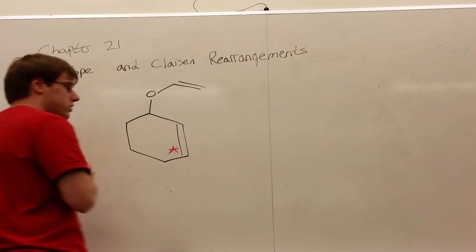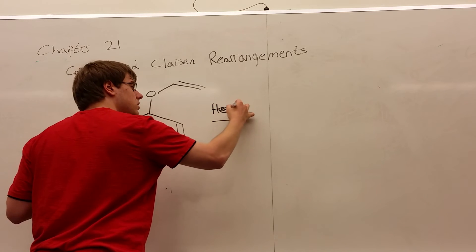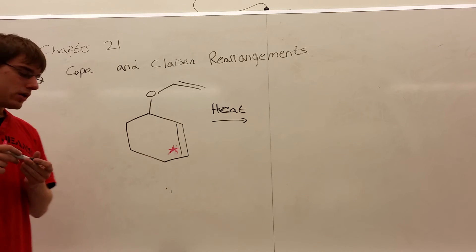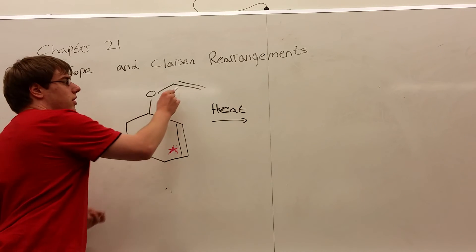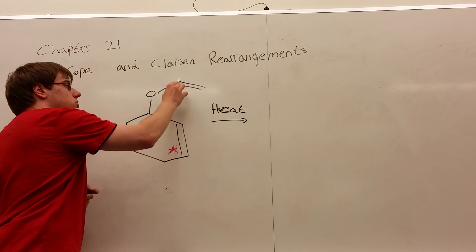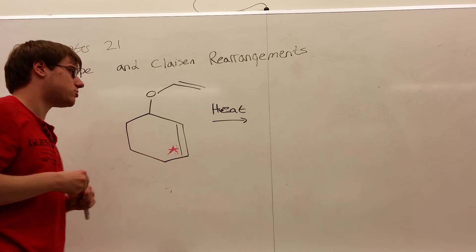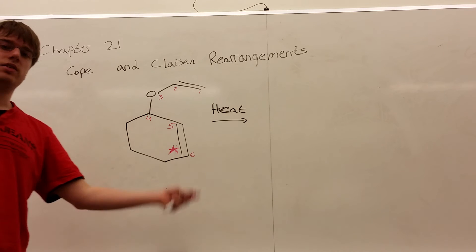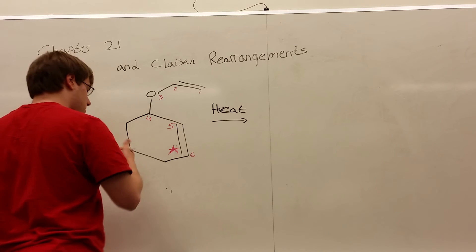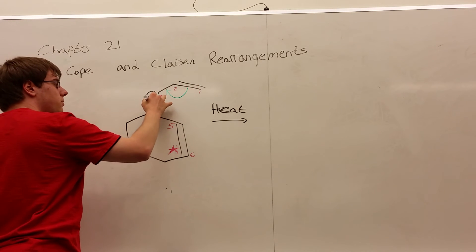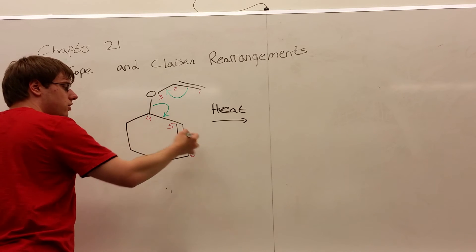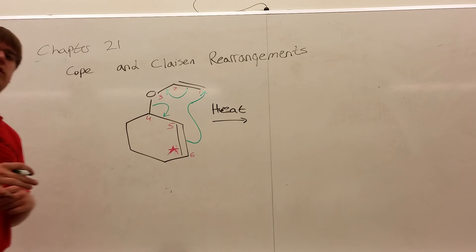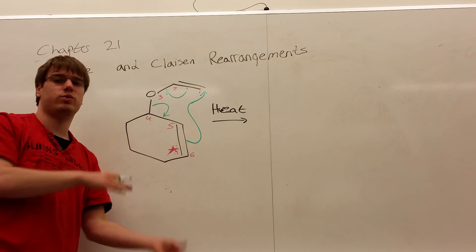So we have heat and this structure, and we're asked what is the major product — make sure to keep track of the star carbon. Start by recognizing: I have heat, a double bond, an oxygen, and a double bond. Counting confirms: one, two, three, four, five, six. So this has to be the Claisen rearrangement, because I have a double bond between one and two, an oxygen on three, and another double bond between five and six, and I see the word heat. So my arrows are the same: start from the bond between one and two and move that to the bond between two and three; start from the bond between three and four and move that to the bond between four and five; start from the bond between five and six and draw that out to either the space between one and six, or to carbon one.